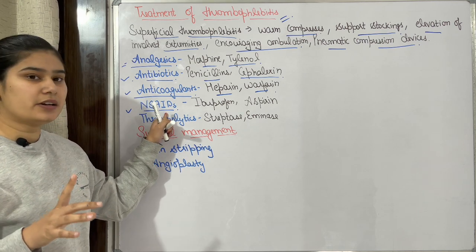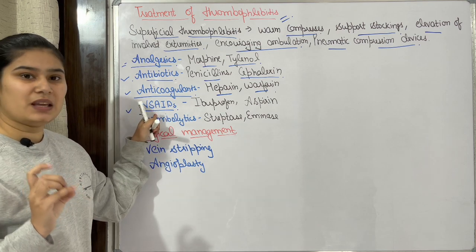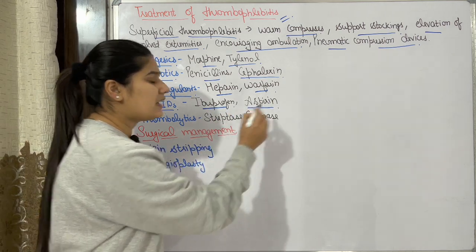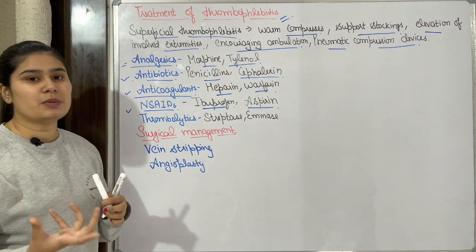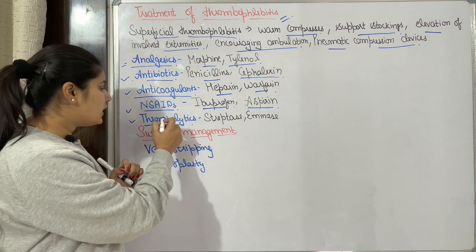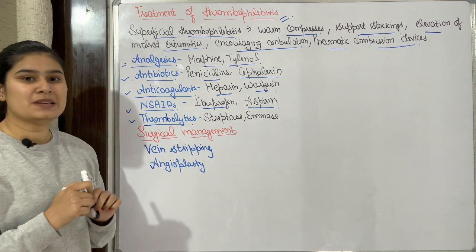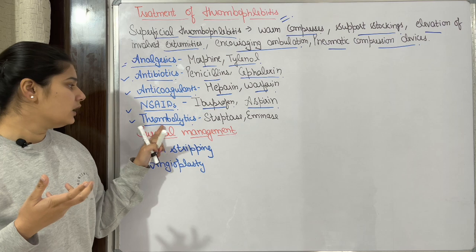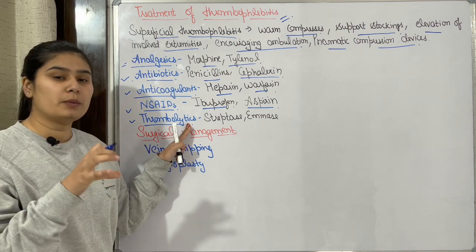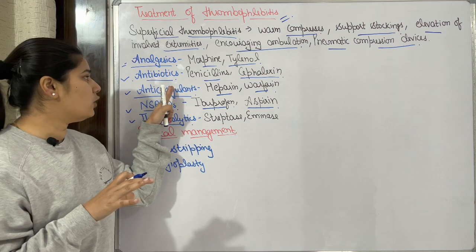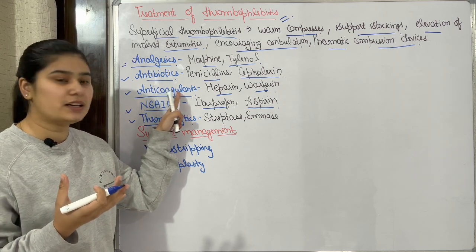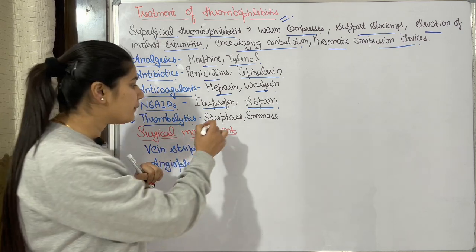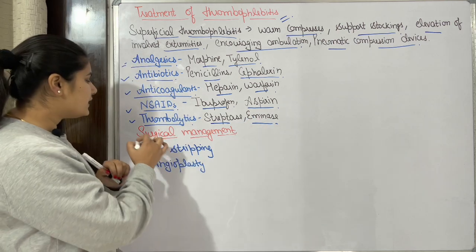NSAIDs — non-steroidal anti-inflammatory drugs — reduce inflammation, pain, and fever. Examples include ibuprofen and aspirin; aspirin also helps in clot dissolution. Thrombolytics — 'thrombus' meaning clot, 'lytics' meaning breakdown — are used to dissolve existing clots. Examples are streptokinase and anistreplase. So anticoagulants prevent new clots while thrombolytics dissolve existing clots; both are blood thinners.